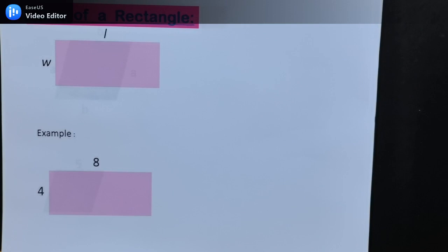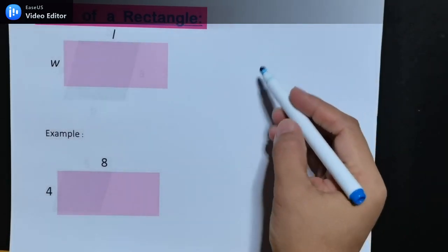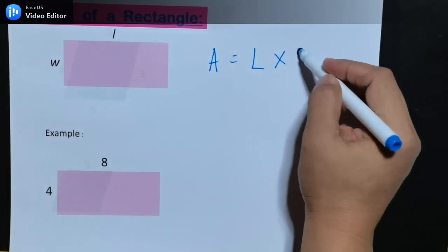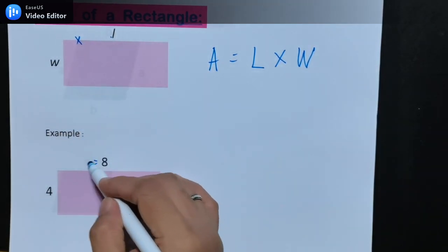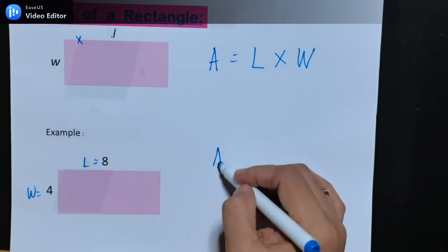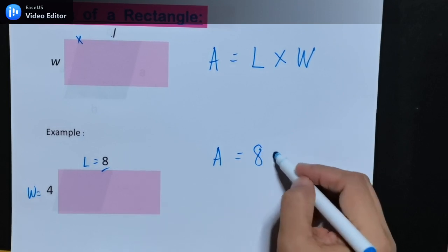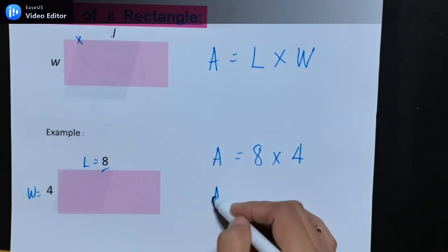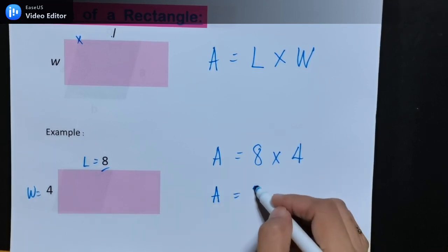Next, area of a rectangle. The area of a rectangle is length times width. From the example, length = 8 and width = 4. So the area is 8 times 4. The area is 32.